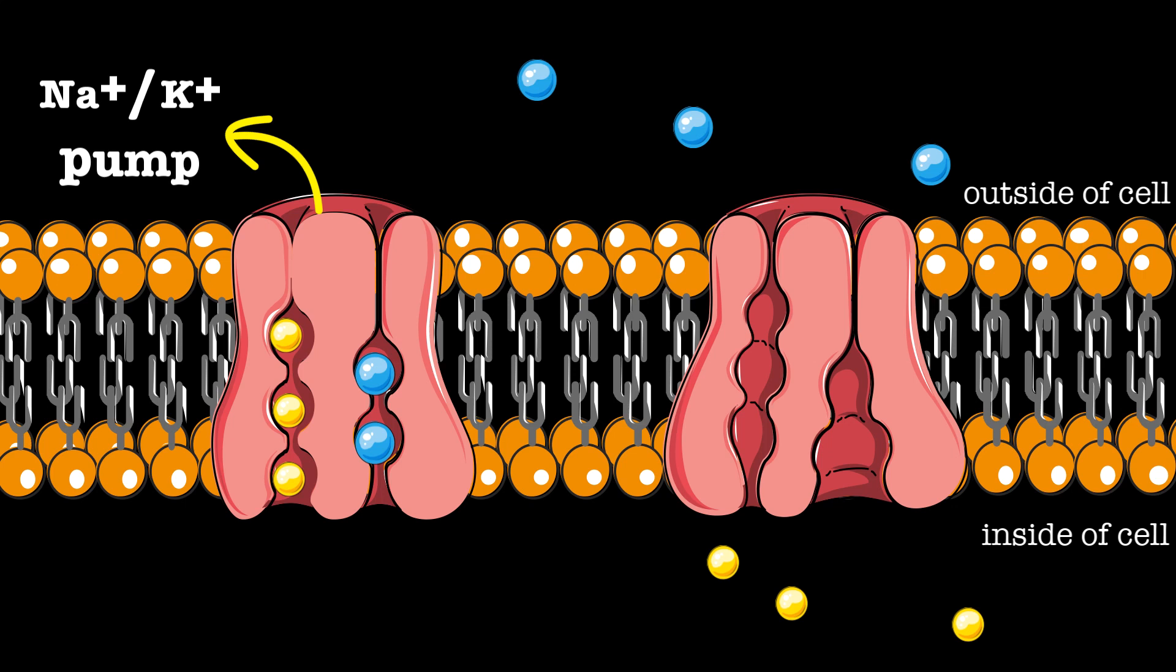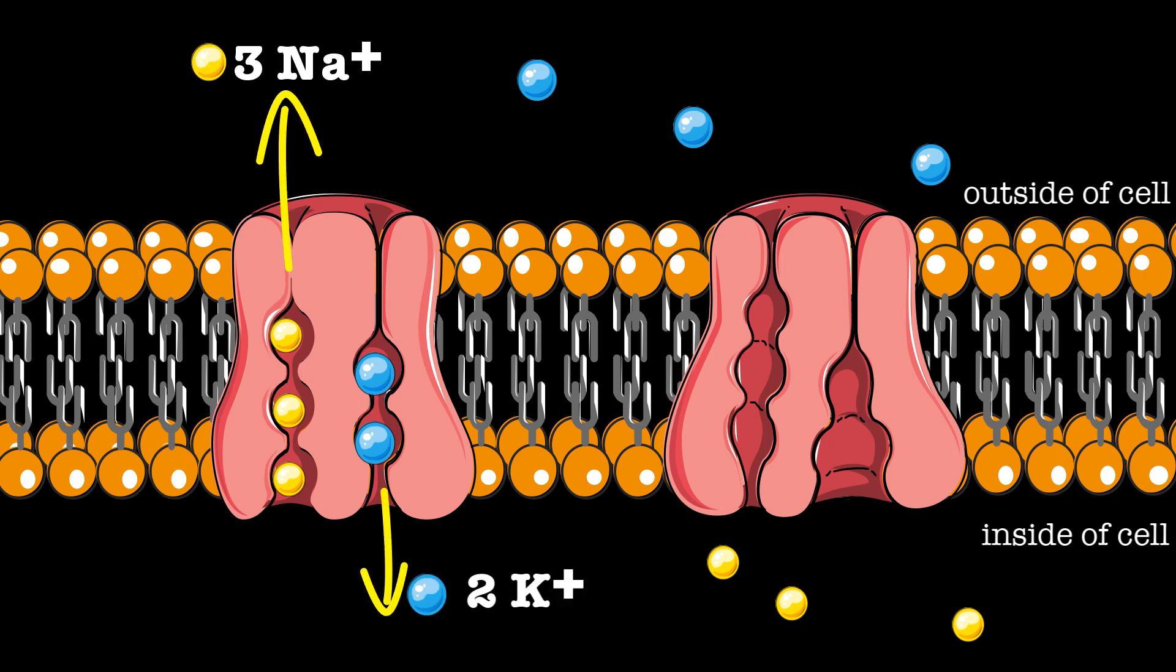Sodium-potassium pump is an example of primary active transport. The pump moves three sodium ions out of the cell and two potassium ions into the cell to create a membrane potential.